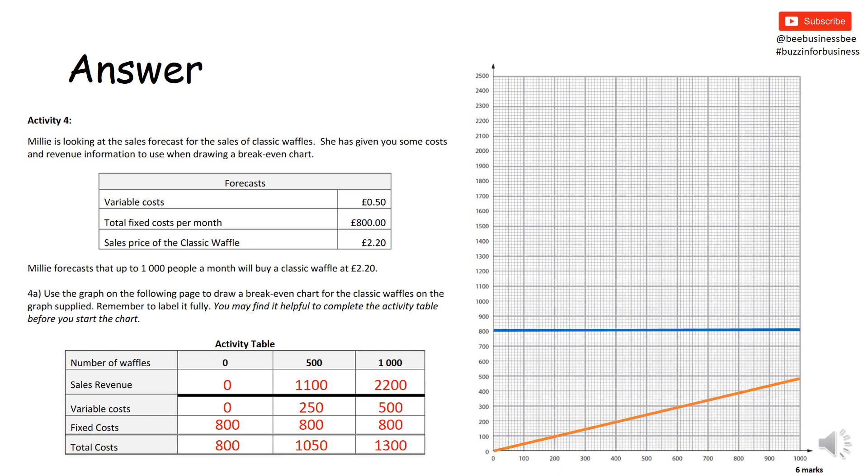I do the same then for my next line, my variable cost line. Zero and zero, down here 500 and 250. I'd go to 500 and 250 and along there 500, and I'd label it up. Then I'd do the same with my total cost line. Notice where the total cost line starts from - total costs always start from your fixed cost line. That's where they start from. That's a rule of thumb.